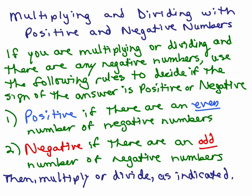You'll simply count the negative signs. For every two of them, you're going to get a positive. And then you're going to multiply or divide as usual to get the numeric part of the answer.